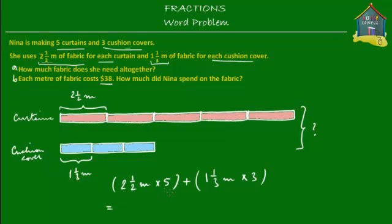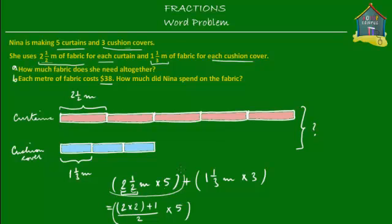Let's calculate. We'll start with the first one: two and a half times five. First, let's convert this mixed number to an improper fraction because that will make multiplication much easier. We multiply the whole number two by the denominator two, then add one, giving us five upon two — and that will be times five.